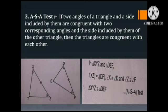ASA test: If two angles of a triangle and the side included by them are congruent with two corresponding angles and the side included by them of the other triangle, then the triangles are congruent with each other. In triangle XYZ and triangle DEF: length of XZ equals length of DF, angle X is congruent to angle D, angle Z is congruent to angle F, and triangle XYZ is congruent to triangle DEF. It is the ASA test.